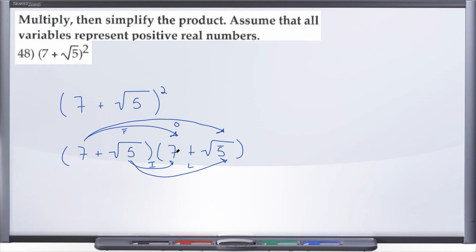So 7 times 7, well that gives us 49, 7 times radical 5, well that's going to be plus 7 radical 5.